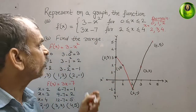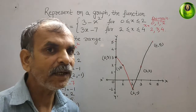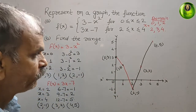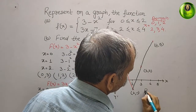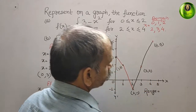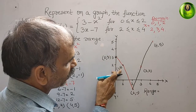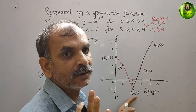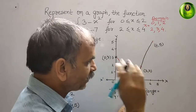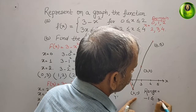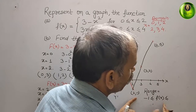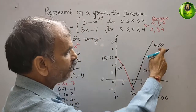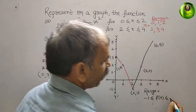Now they asked to find the range — that means from where to where the y-axis values go. The y values we obtained are 3, 2, and minus 1 from the first function, and minus 1, 2, and 5 from the second. Minus 1 is the minimum point and after that the values increase. So the range is: minus 1 less than or equal to f(x) less than or equal to 5.